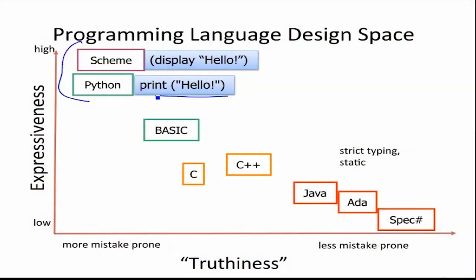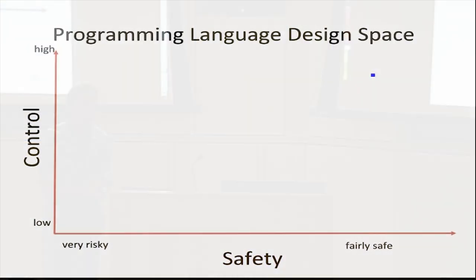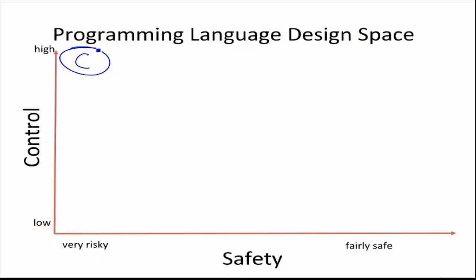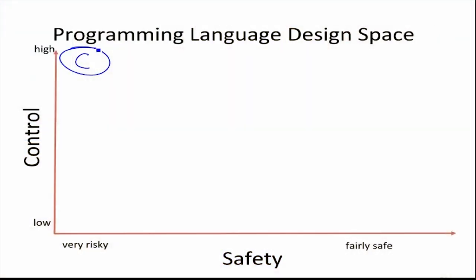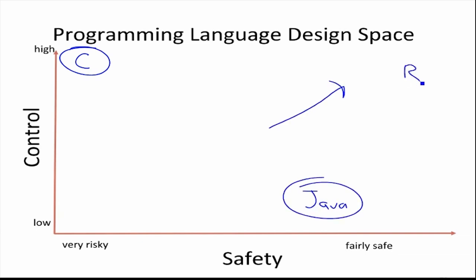It looks like we're always going to need to sacrifice truthiness for expressiveness. If we look at languages with high expressiveness, you have one line of code to print 'hello,' whereas in Java you need a whole page of code — but it's easier to make mistakes because the compiler can't check as much, you don't have static type checking. Our goal is to have high expressiveness and high truthiness. What about control versus safety? C gives you a ton of control but very little safety — it doesn't even check when you go outside the bounds of an array. Java is fairly safe but gives you very little control. What we really want is to be up in the high-control, high-safety region, which is really pretty close to what Rust actually achieves.